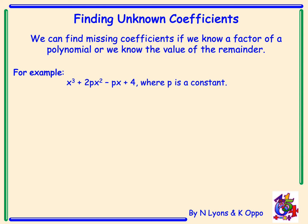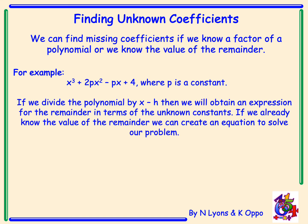For example, if we have the polynomial x cubed plus 2px squared minus bx plus 4, where p is a constant, we can divide the polynomial by x minus h and then obtain an expression for the remainder in terms of our unknown constants. If we already know the value of the remainder, we can create an equation to solve our problem. This will become clear when we go through an example together.